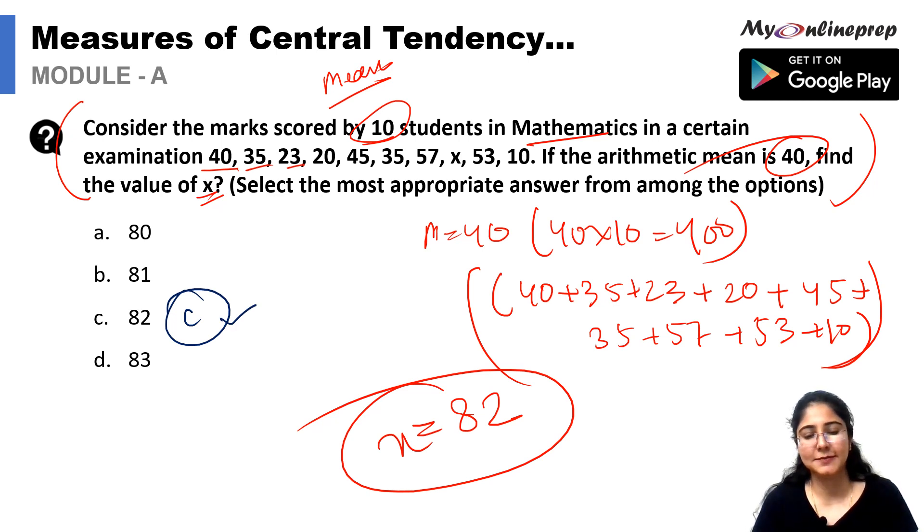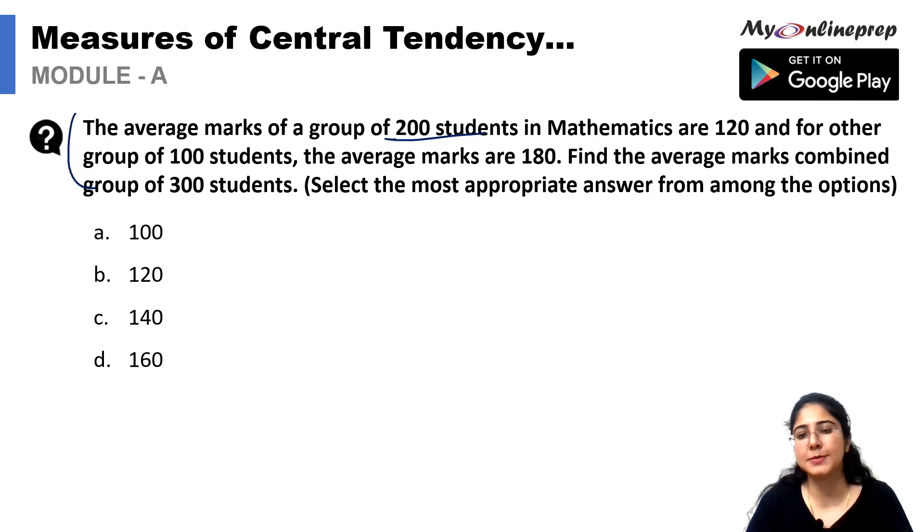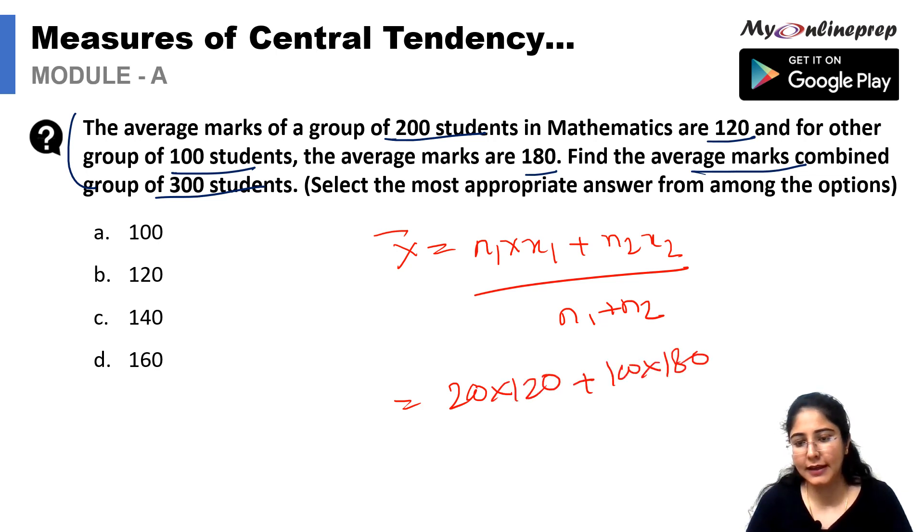Proceeding to the next question, the average marks of a group of 200 students is 120 and another group of 100 students has average marks as 180. Find the average marks of the combined group of 300. The formula here would be N1 times x1 plus N2 times x2 divided by N1 plus N2, which means 200 multiplied by 120 plus 100 multiplied by 180 whole divided by 200 plus 100 equals 300. While solving this we get our answer as 140. Option C is the correct answer.